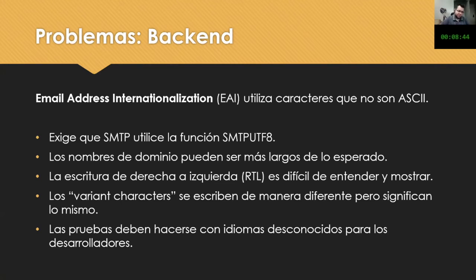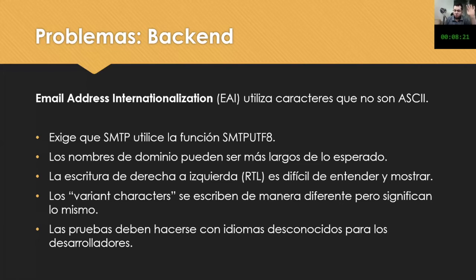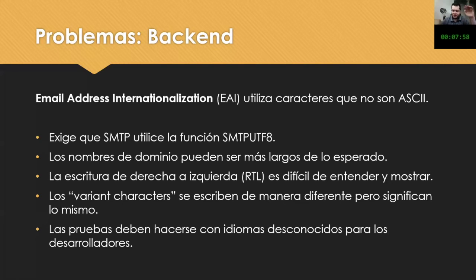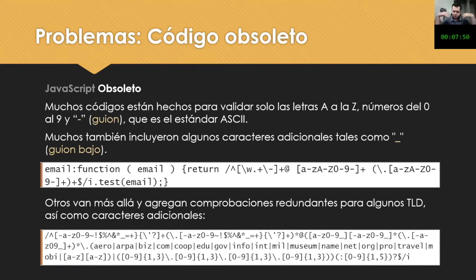This poses a challenge to the way we normally think about internet domains. We also have variant characters — in China, for example, it is quite common that characters are written in a different way but the meaning is the same. How can you find solutions to these things, particularly when we think about concepts such as phishing? And finally, testing has to be done with languages that are unknown to the developers — you have to have a whole set of scripts that are not part of their experience. The back-end part has a whole series of issues to be taken into account.